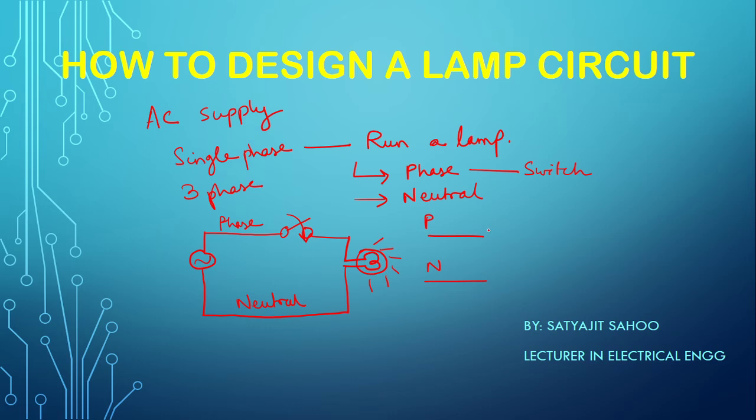Then you have to connect a switch in the phase wire and then the bulb. The other terminal of the bulb will be connected to this neutral side. Then when you operate this switch, the bulb will glow.